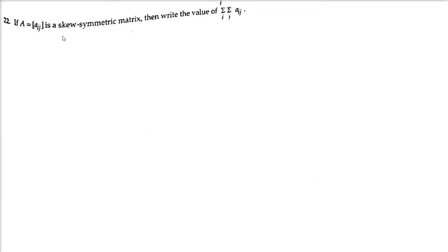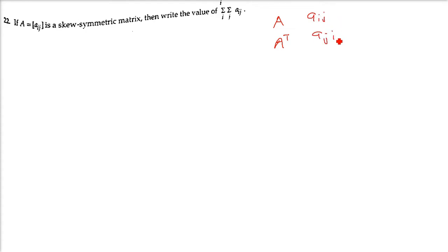Next question: if Aij is a skew-symmetric matrix, find the value of Σij Aij — that is, the sum of all elements. Since A is skew-symmetric, taking the transpose means Aij becomes Aji, and since it is skew-symmetric, Aij = -Aji.